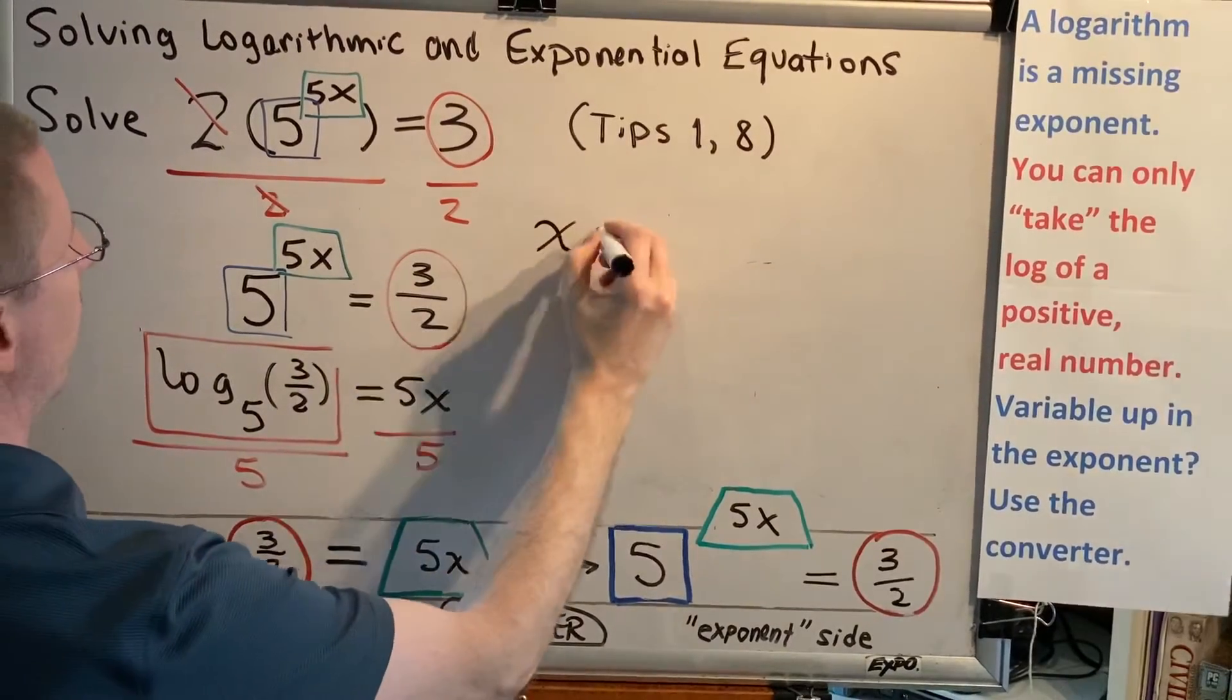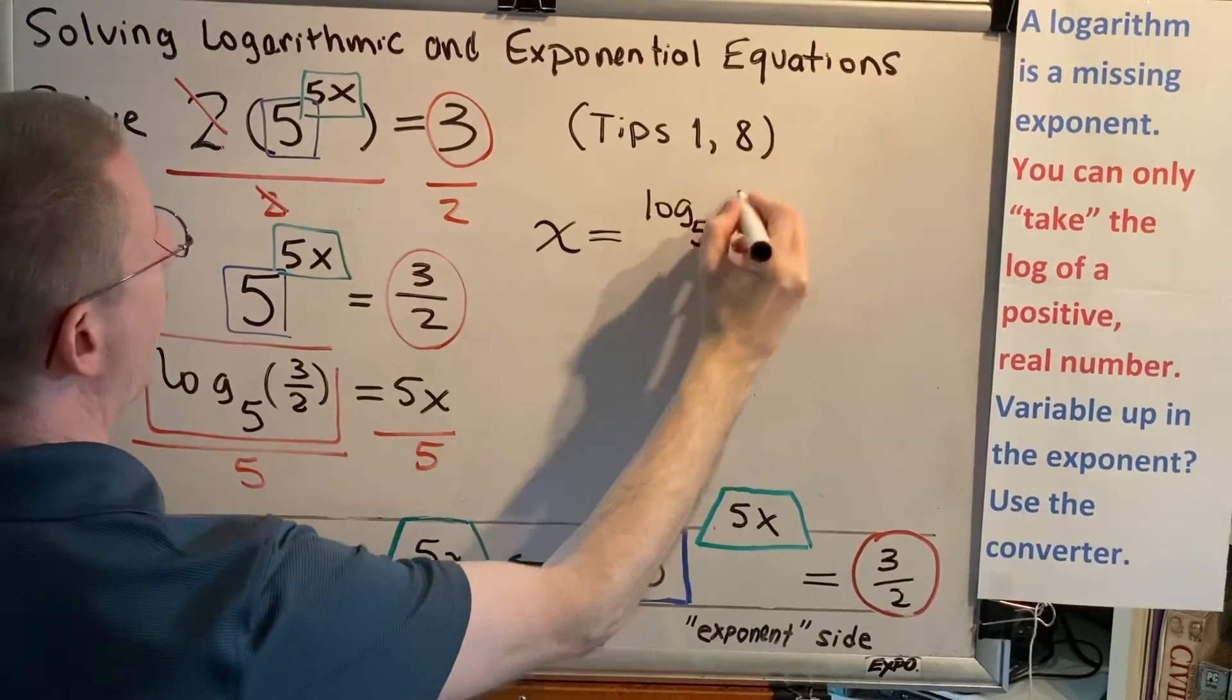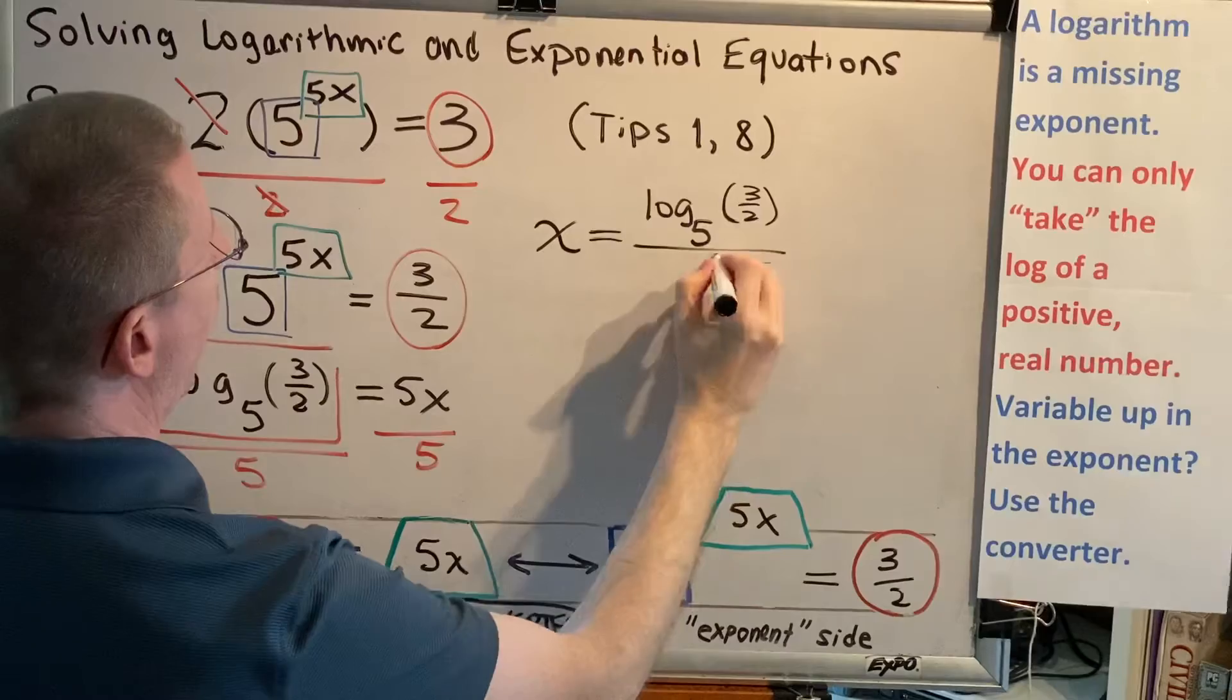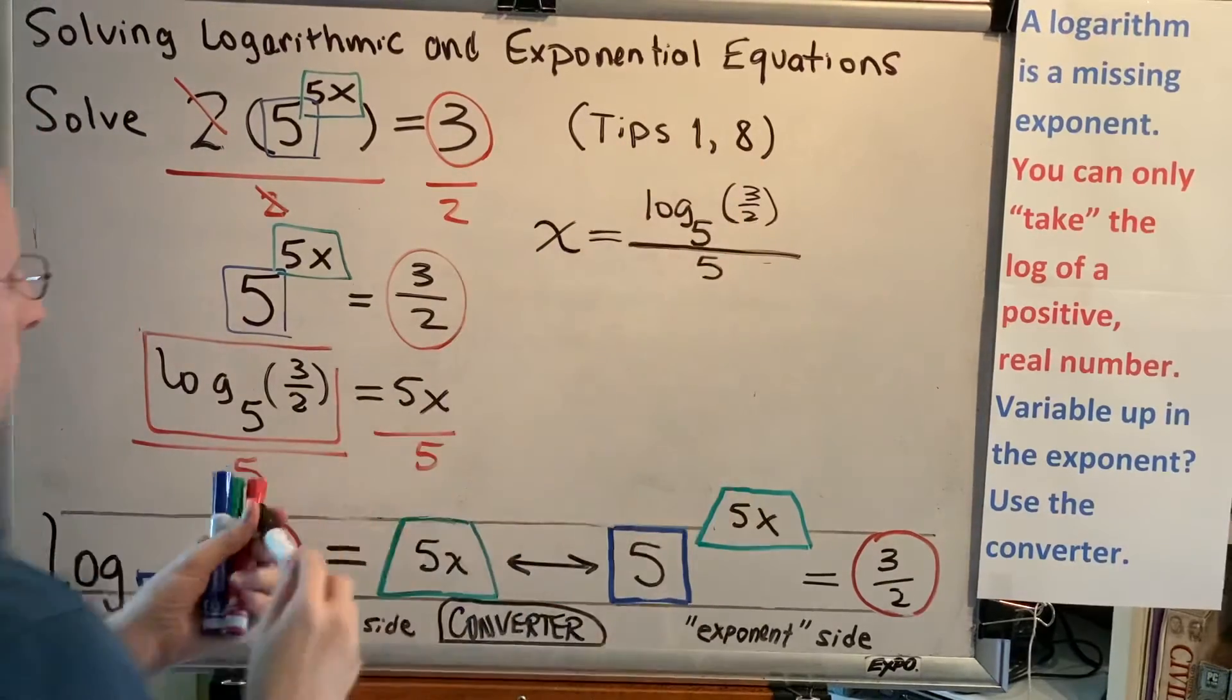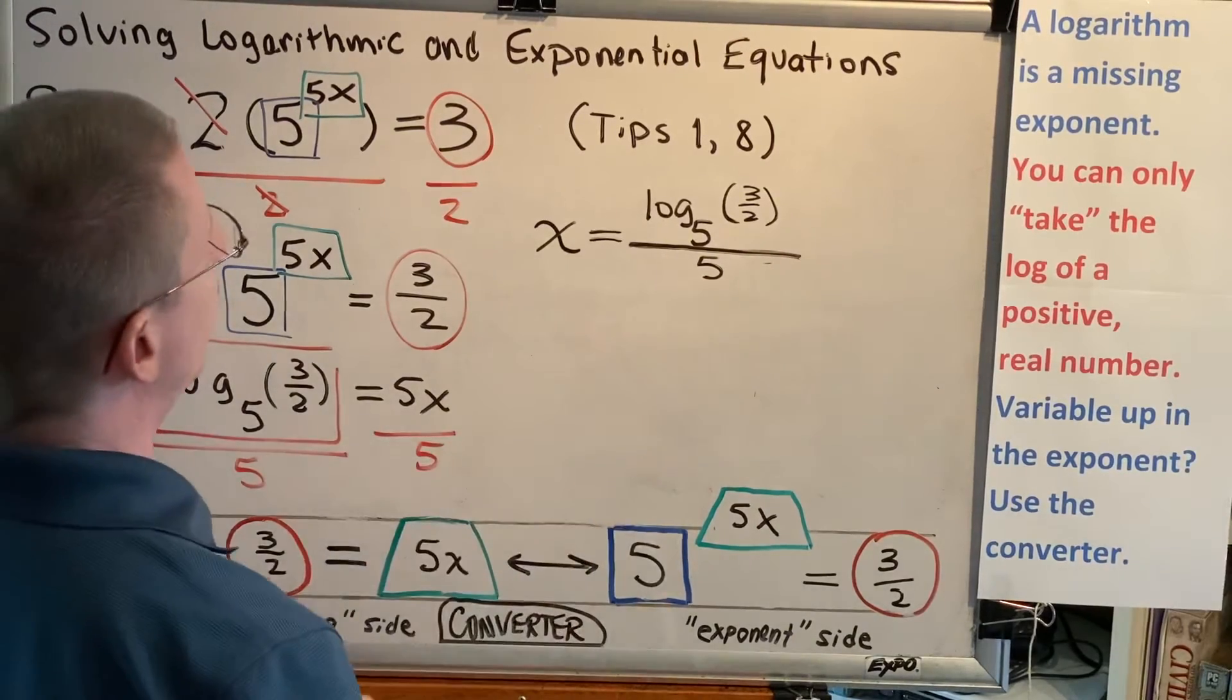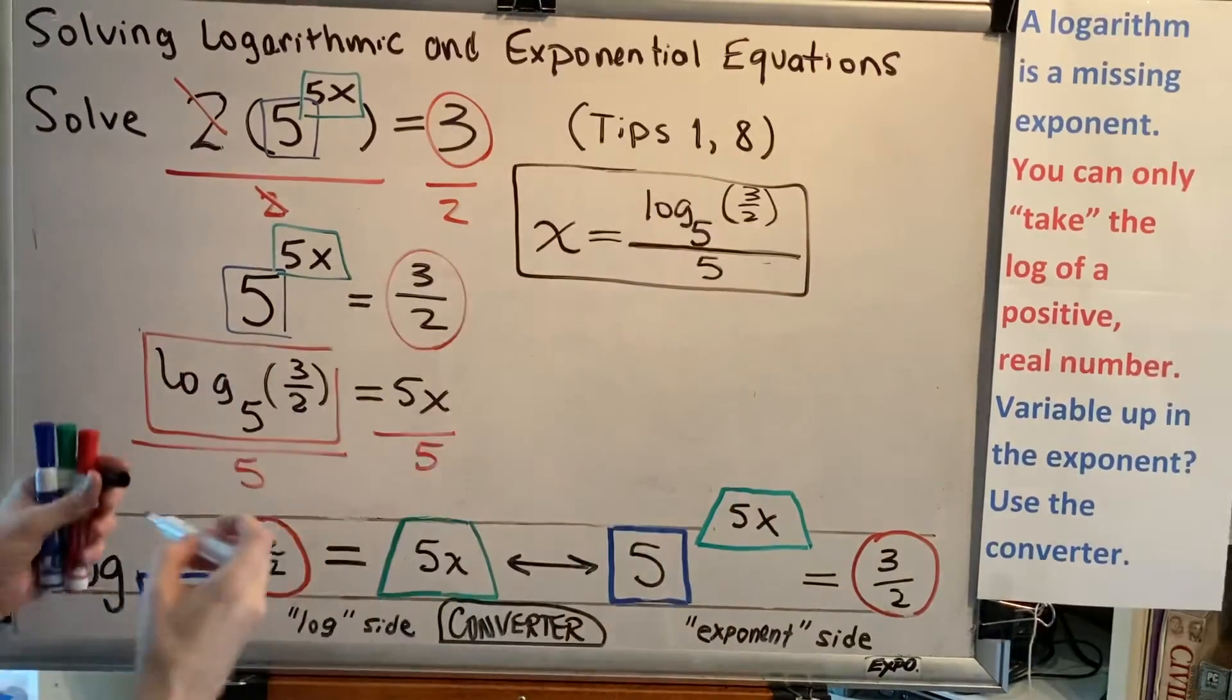Leaving us with the answer x equals log base 5 of 3 halves all divided by 5. It's very important that this fraction bar goes all the way across. The entire logarithm is being divided by 5. Alright, with no domain to compare to, we're left to believe that this is our final answer.